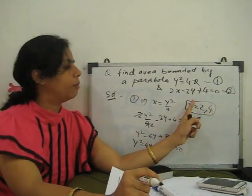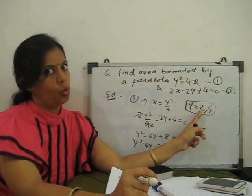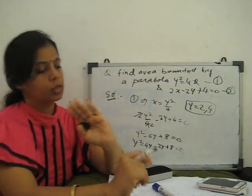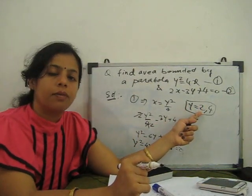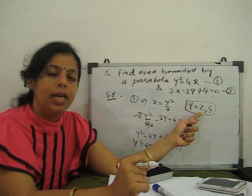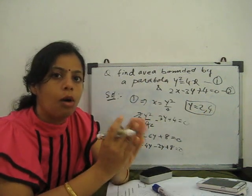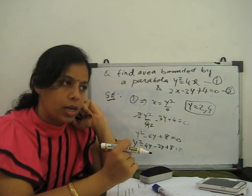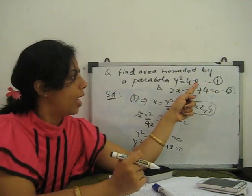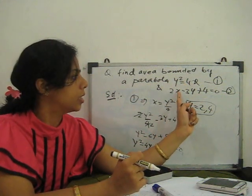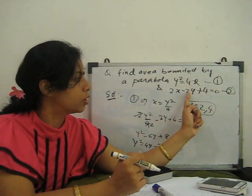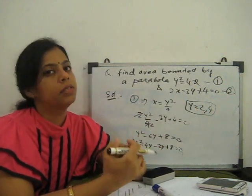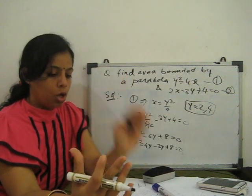The maximum y is 4 and minimum is 2. Next, we find the limits for x in terms of y. One limit is x = y²/4 (from the parabola). The other is x = (3y − 4)/2 (from the line). We need to decide which is the upper limit and which is the lower limit.